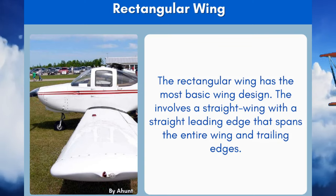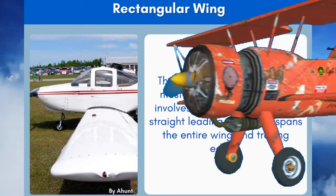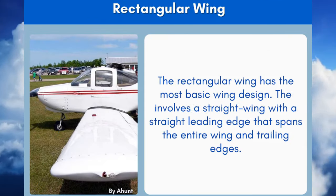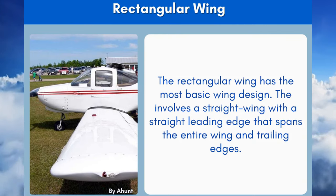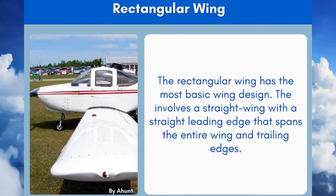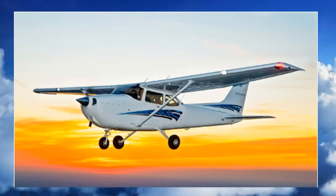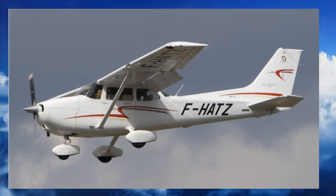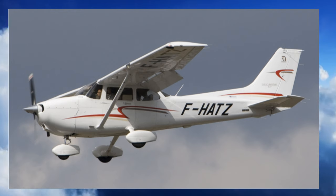2. Rectangular Wing Design. The rectangular wing is one of the most basic wing configurations. This type of design involves a straight wing with a constant chord along a straight leading edge that spans the entire wing and trailing edges. A good example of a rectangular wing aircraft is the Cessna 172.